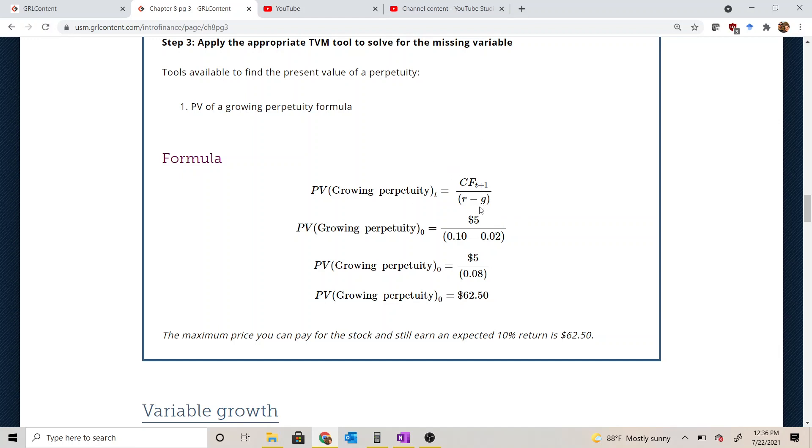So when we plug in the information we've got from this problem, the cash flow one year from today, remember we're looking for the present value as of today, time period 0, the cash flow one year from today is $5. Our discount rate is 10%, expressed as a decimal is 0.1, and our growth rate is 2%, expressed as a decimal is 0.02.